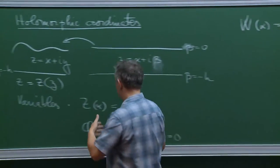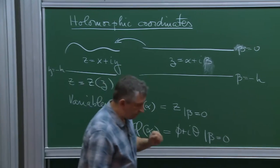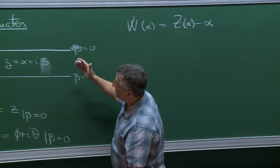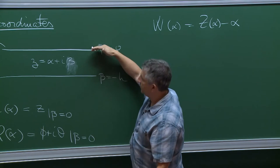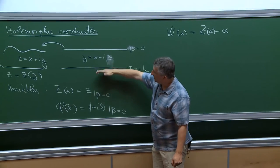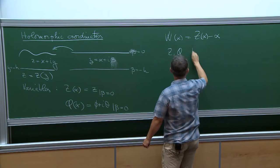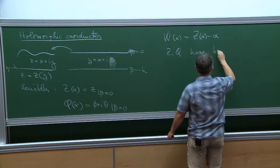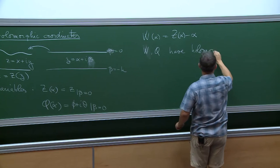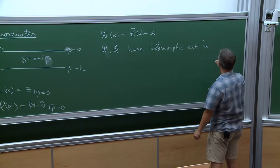What is the state space — the class of functions for z and q? The important observation is that you don't look at arbitrary functions z and q. Instead, z and q will be functions defined on the top that have holomorphic extensions in the model domain. So w and q have holomorphic extensions in the model domain.